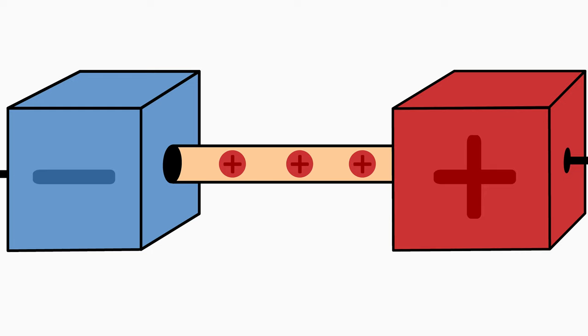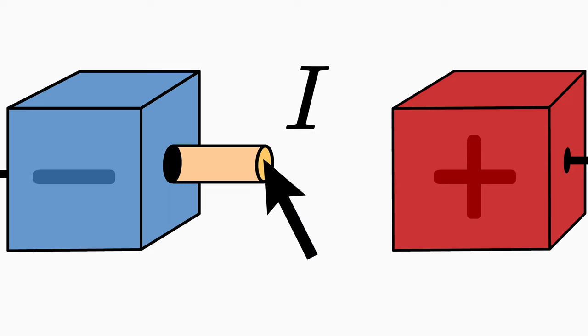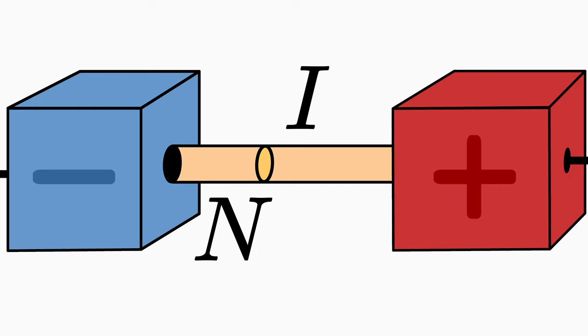Qualitatively speaking, the current becomes larger when more charges pass through the wire. But how do we quantify the current now? Let's abbreviate the electric current through the wire with the letter I. Then we concentrate on a cross-sectional area of the wire. If we cut the wire, we would get such a round circular area here. This circular area is called the cross-sectional area of the wire. The positive particles will of course pass through this area. Let's count how many particles pass through it. Let's do it for 10 seconds. We use the letter N for the number of charged particles that have passed through the area.